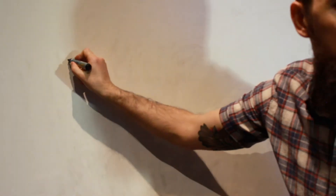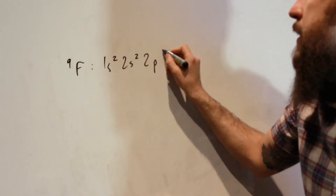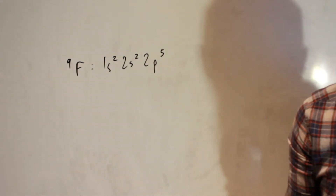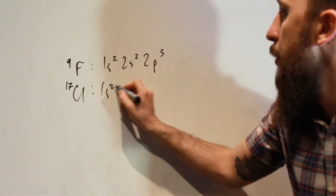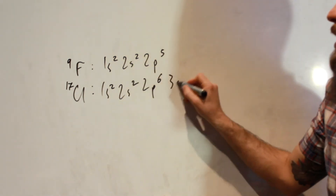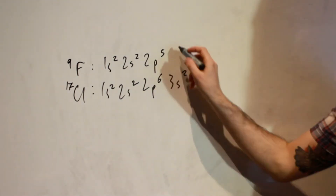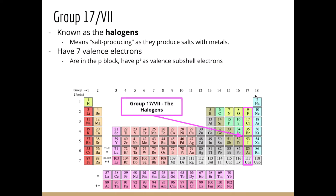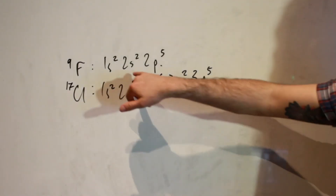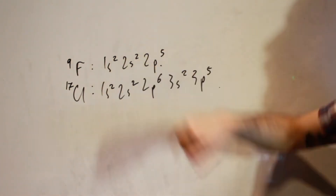For example, fluorine, atomic number 9, is 1s2, 2s2, 2p5 — that's 2+2+5 = 9. Chlorine at atomic number 17 is 1s2, 2s2, 2p6, 3s2, 3p5 — that's 10+7 = 17. So they finish with five valence P orbital electrons, giving seven electrons total in the outermost principal quantum level, since the outermost orbital is the P orbital.